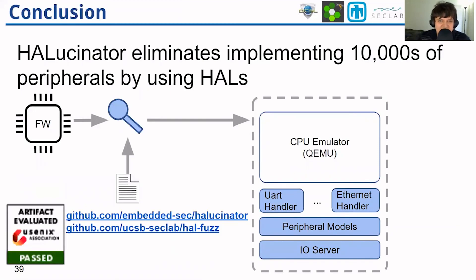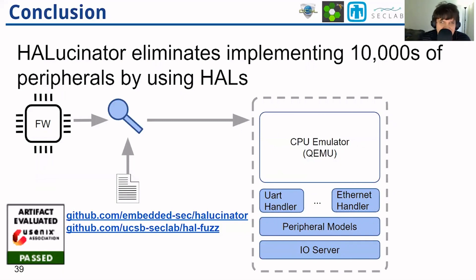In conclusion, Hallucinator eliminates the need to implement tens of thousands of peripherals by instead focusing on the dozens of HALs. You can find the source code for Hallucinator, HalFuzz, and libmatch at the GitHub links here, and these artifacts passed artifact evaluation. Thank you very much for your time.